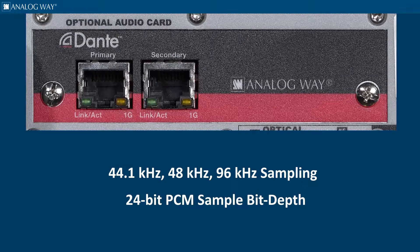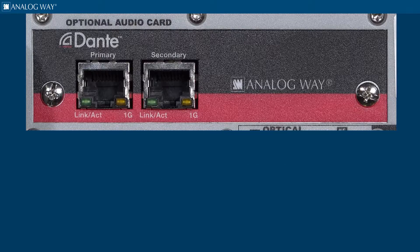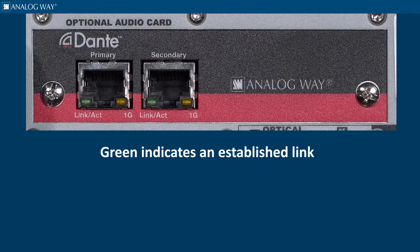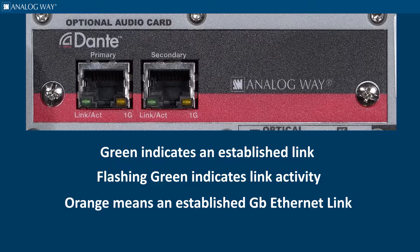You can monitor the link status via the standard LED light. Green indicates an established link and flashing indicates link activity. The orange LED indicates an established gigabit Ethernet link.